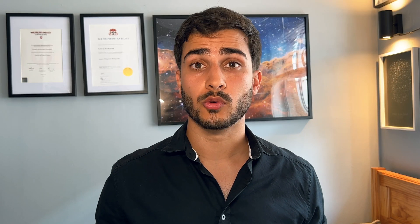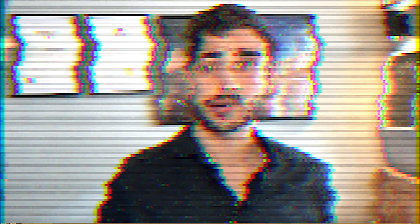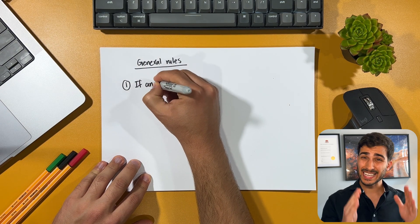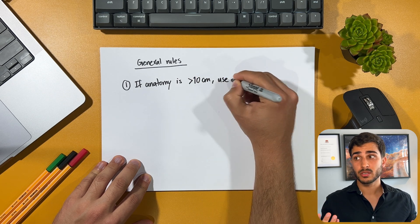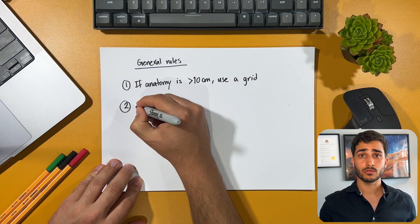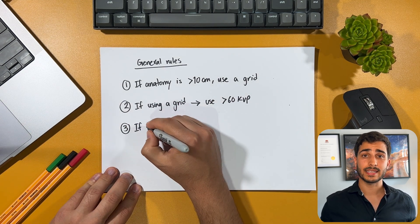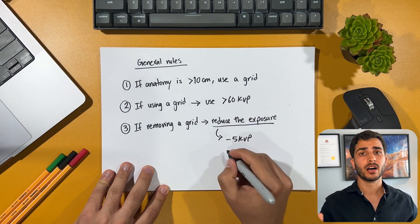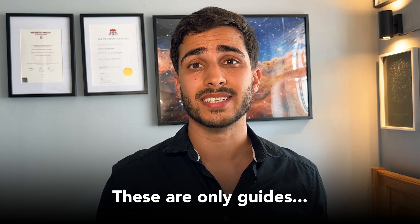Now notice those two examples were out of Bucky — that is, no grid involvement. So what happens when we need to include the large areas of the body that do need a grid? The general rule is that if you're going to use a grid, the anatomy should be at least over 10 centimeters in thickness — for example, your shoulder, your hip, some femurs. And the other rule is that you want your kVp to be at least over 60, and that if you're taking out your grid, you'd drop down your exposure by about 5 kVp and roughly half your mas.